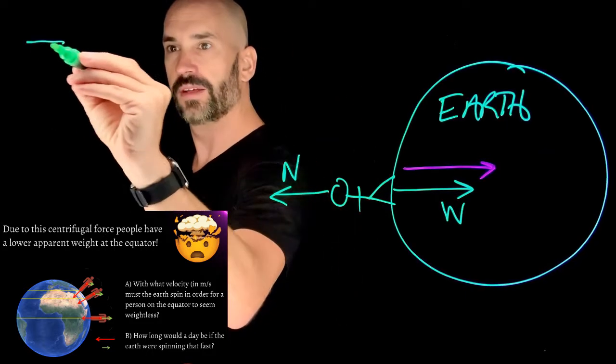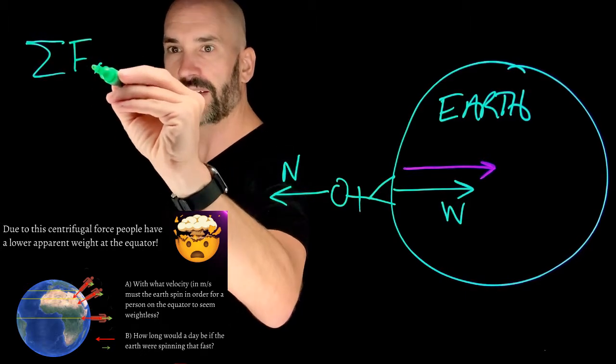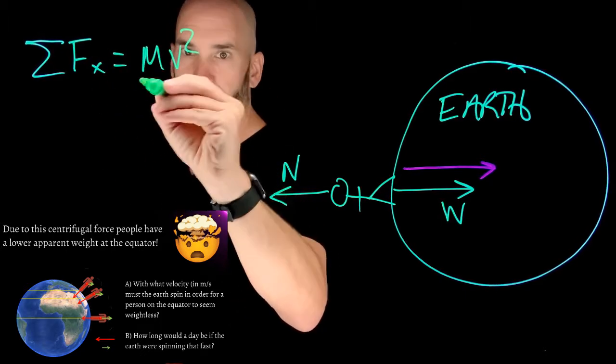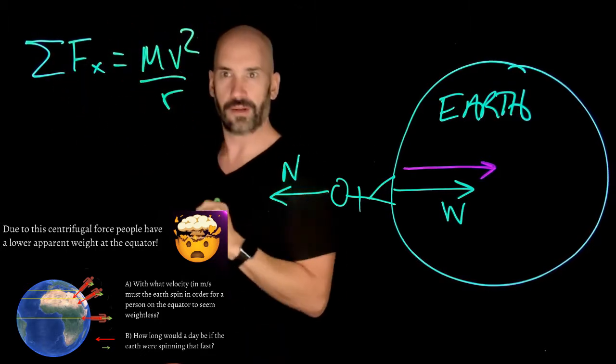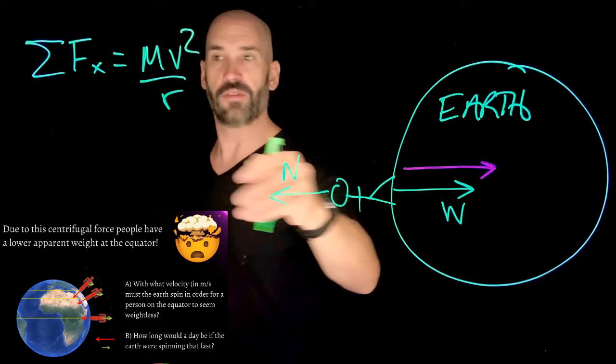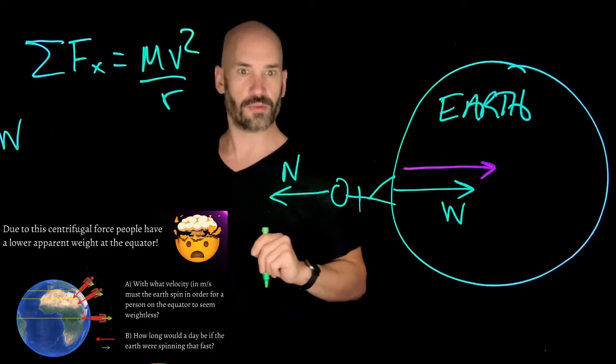So summation of forces in x must equal to mv squared over r. When we're talking about circular motion, this is our Newton's second law. In this case, we have weight pointing towards the center of the earth.